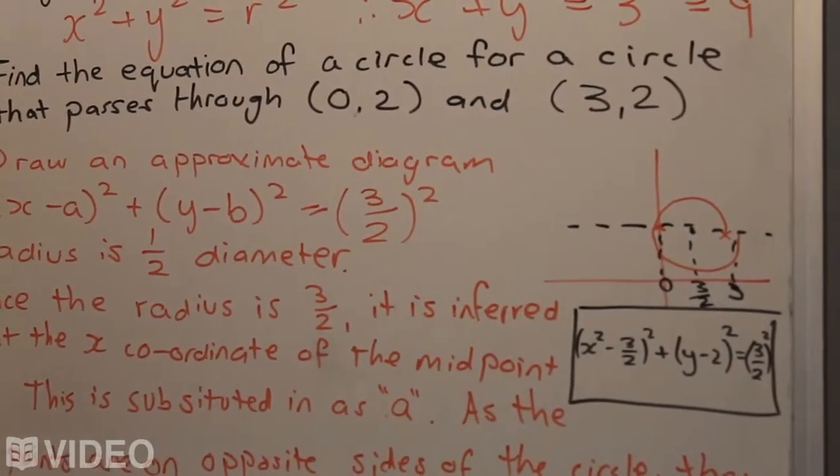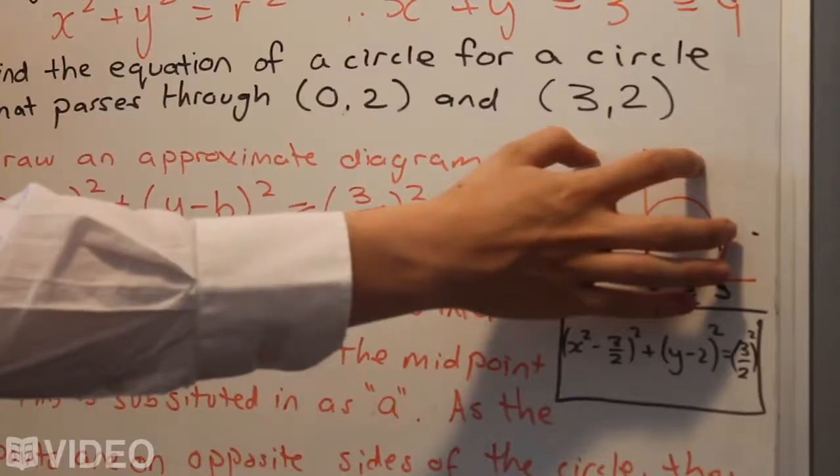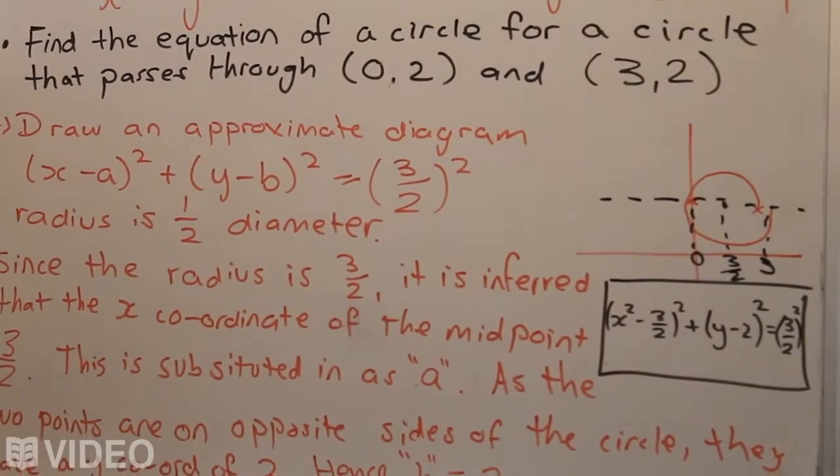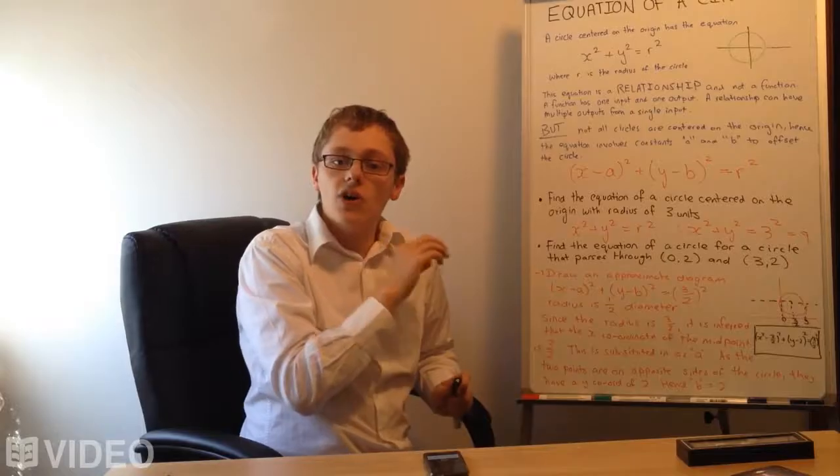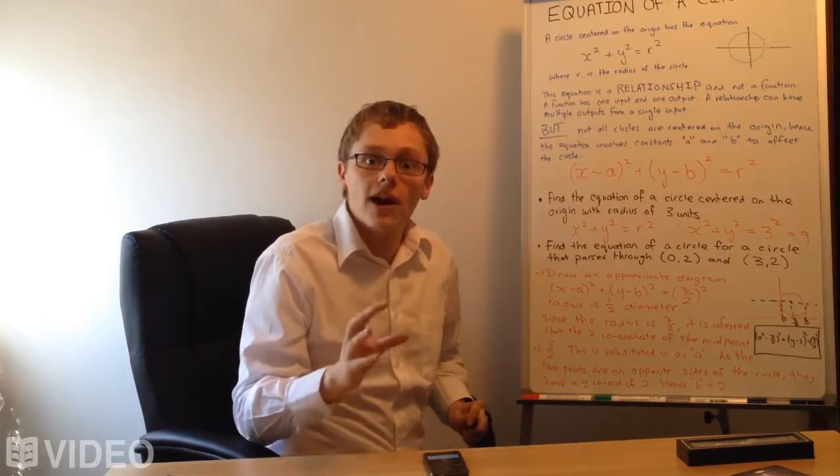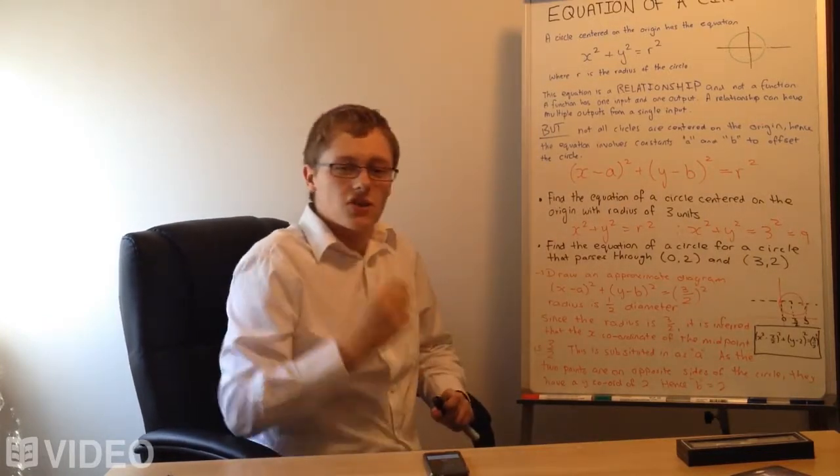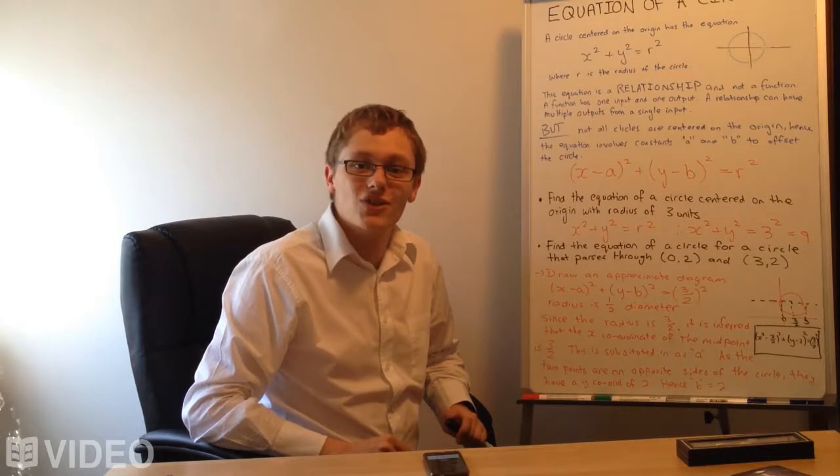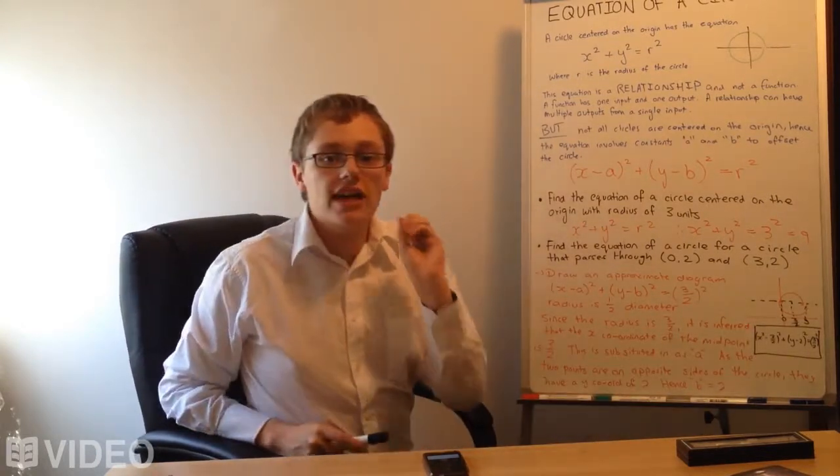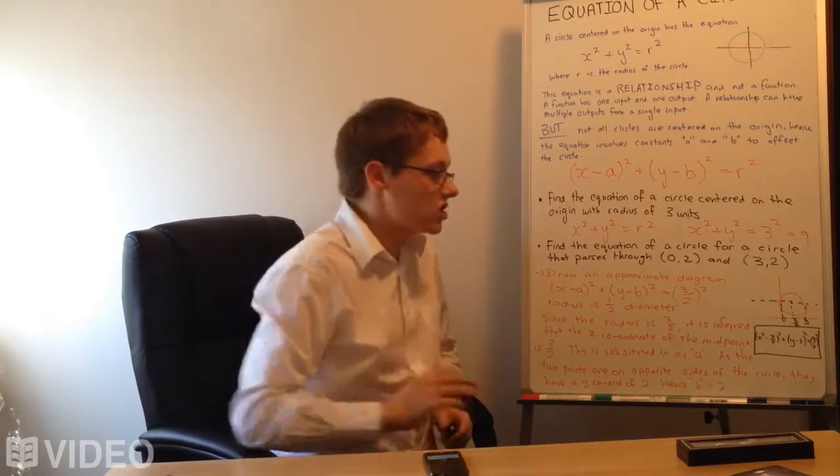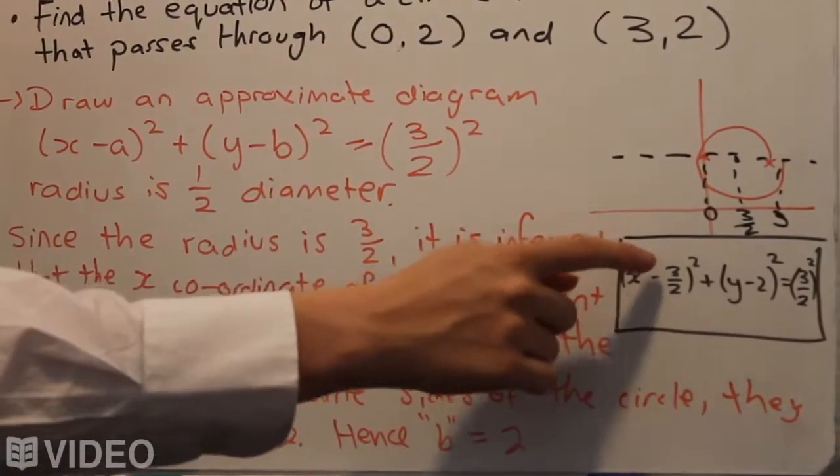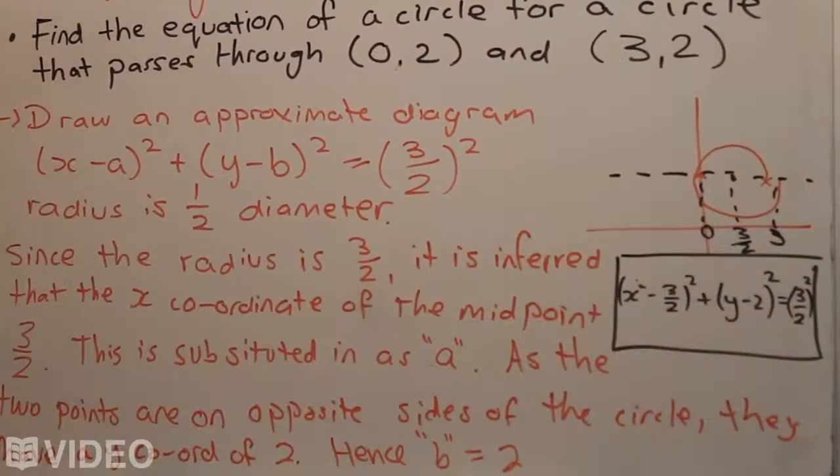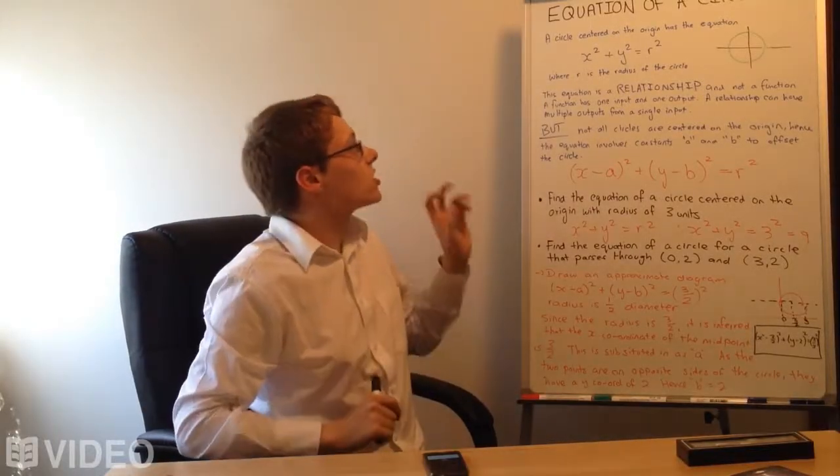And if you couldn't work out the radius, because this wasn't a 0 here, it was positioned somewhere else, then you could always use the distance formula to find the radius as well, between the midpoint. So there are ways to get around this. But just by looking at this, because the numbers work out quite nicely, you can actually infer quite a few things. You won't always get circles like this. So it's important to know your midpoint and distance formulae, but it's really good to be able to take these sorts of shortcuts too. And as such, we get a final relation for the circle equation. We get x take 3 on 2 squared, plus y take 2 squared, equals 3 on 2 squared. And that's our final equation for the equation of a circle.